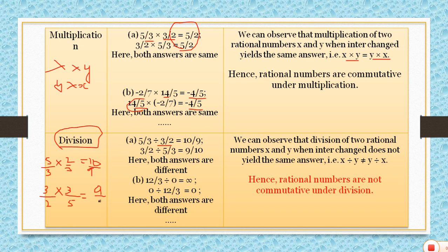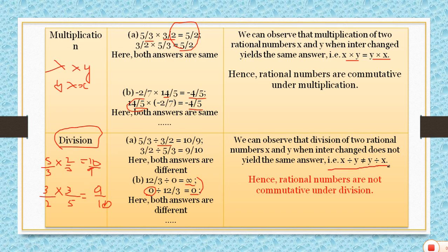One answer is 10 by 9 and the other is 9 by 10 — they are different. Also, when 12 by 3 is divided by 0, the answer is not defined. But when 0 is divided by 12 by 3, the answer is 0. This is a huge difference. So x divided by y is not equal to y divided by x — rational numbers are not commutative under division.